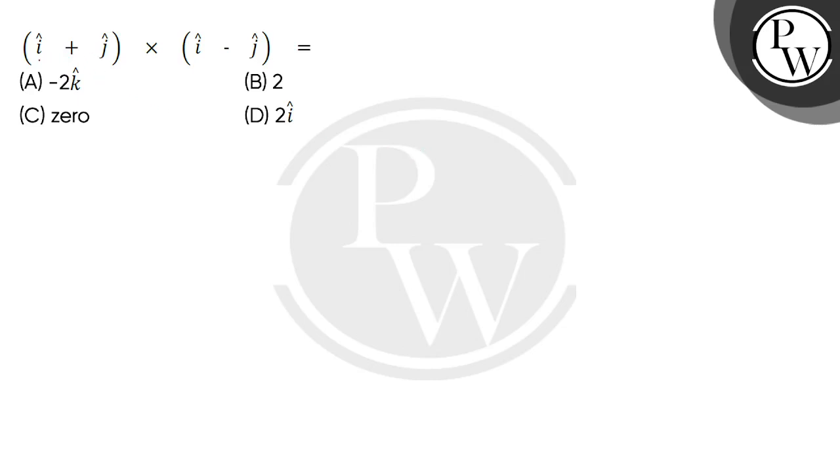Let's read the question. i cap plus j cap cross i cap minus j cap equals 2. So here we have to find the cross product.